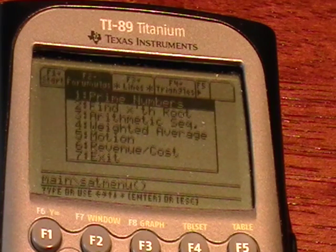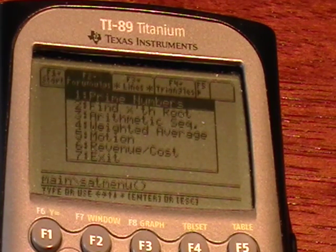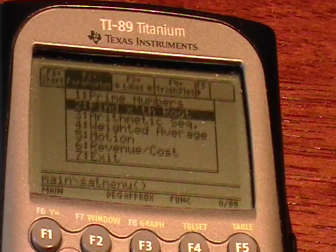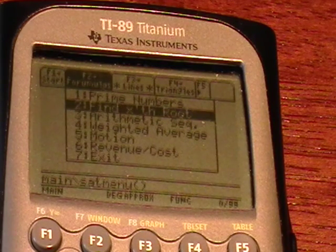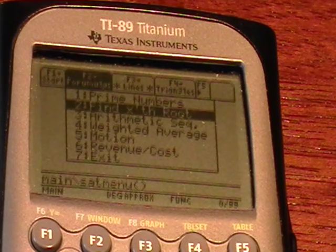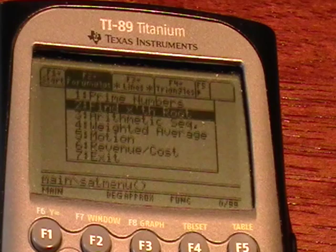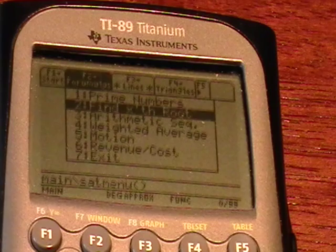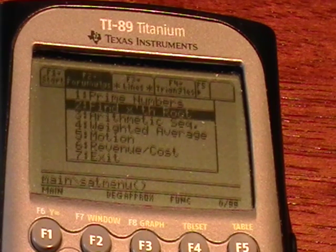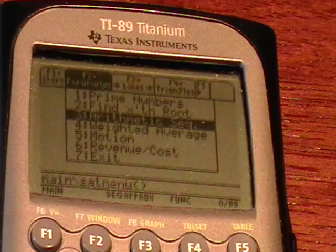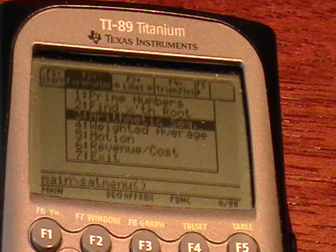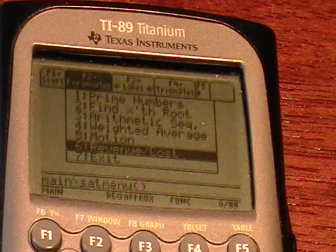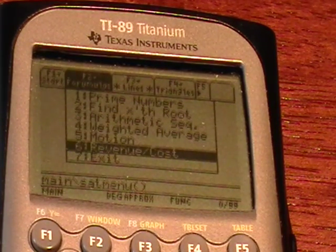Under the formulas tab, we have prime numbers, finding the x root, which is a way of finding the third root, fourth root, or fifth root of a number—something that normally isn't available immediately on your calculator. We also have arithmetic sequences, weighted averages, SAT motion problems, and revenue and cost problems.